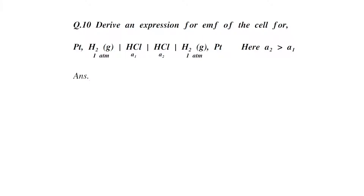Derive an expression for EMF of the following cell: platinum is in contact with hydrogen gas at one atmospheric pressure, which is in contact with HCl solution of activity a1. This whole electrode is in contact with another HCl solution.